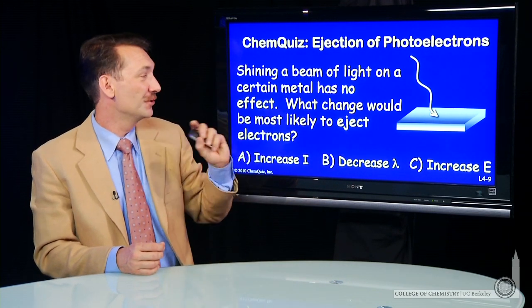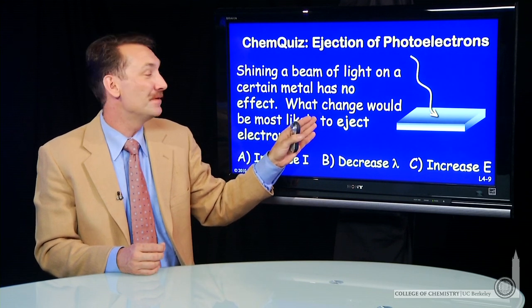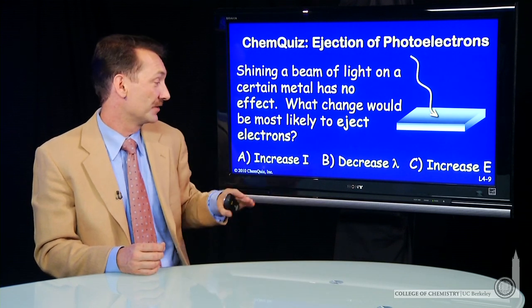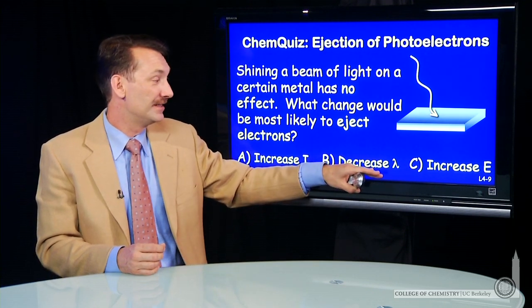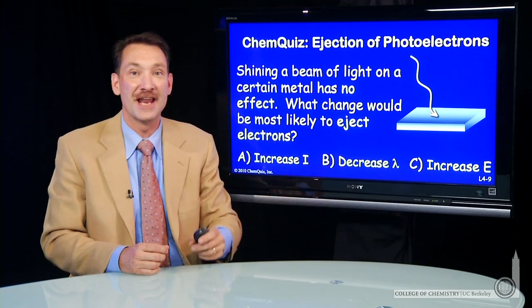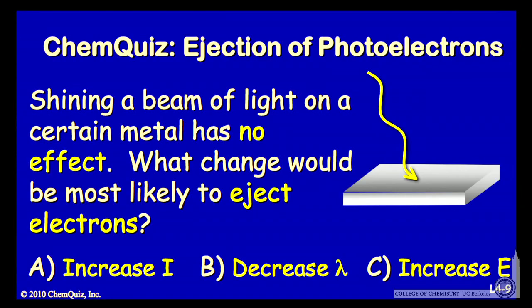The question I have for you is, what change in that beam should I make in my best hope to eject electrons? Should I increase the intensity of the light, decrease the wavelength of the light, or increase the energy of the light? Think about that for a minute and make a selection.